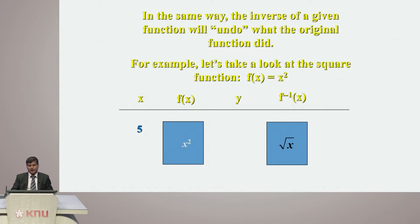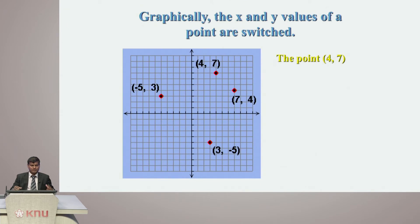Let's consider another example: we have 5, it goes to the function x squared, it produces the value 25, and this 25 goes through the inverse function f inverse of x — that is root of x — and that gives us the result 5. That's true for any values that we have.